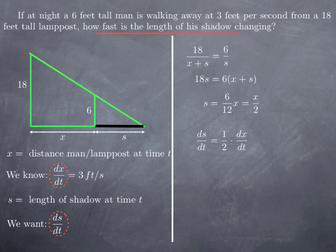Since we know dx over dt, which is 3, we obtain ds over dt, which is 3 halves in feet per second. This is how fast the length of the shadow is changing.